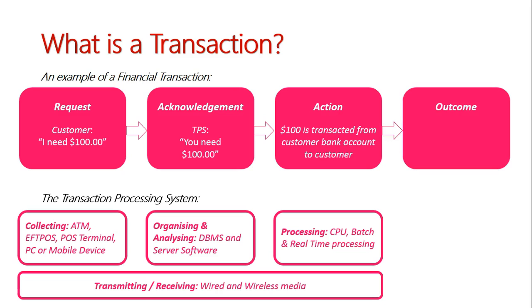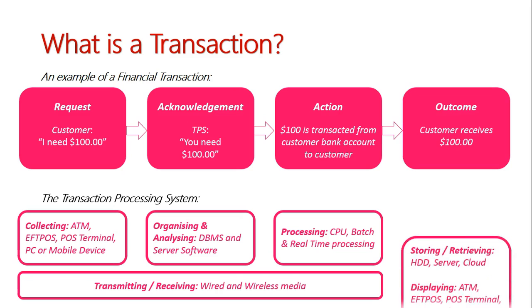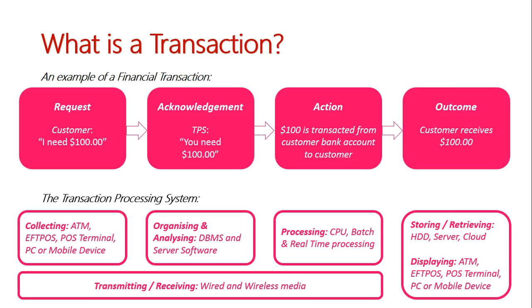Finally, is the outcome — the customer receives their $100. That's what we've been trying to do the whole time. They get their money. This needs to be updated on the server and the customer's account, so there will be storing and retrieving. This gets saved. The customer also needs to see confirmation, which will come through a displaying device such as the ATM, EFTPOS, point-of-sales terminal, PC, or mobile device.